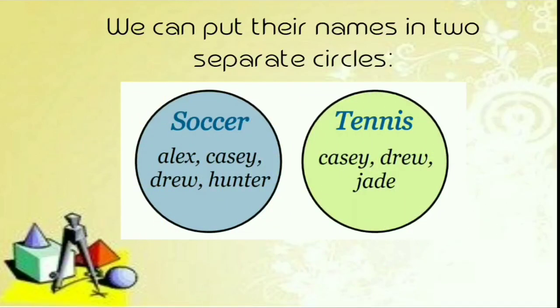Now, we can put their names in two separate circles. The first circle is soccer — those people who play soccer are Alex, Cassie, Drew, and Hunter. On the other side, we have the circle for tennis. The people that play tennis are Cassie, Drew, and Jade.